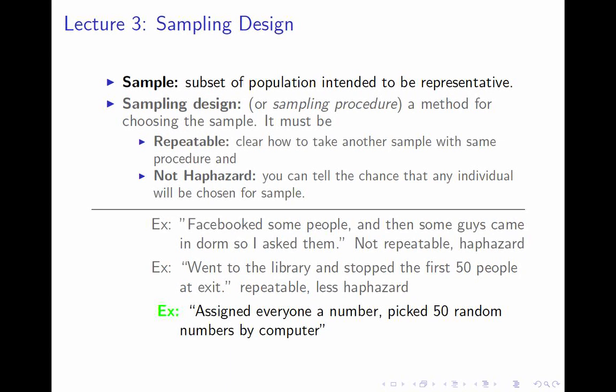Here's a third example: 'I assigned everyone in the population a number, I had my computer pick 50 random numbers, and I asked those people.' You can see I know exactly how to do that procedure — no problem. And it's not at all haphazard. I know exactly what each individual's chance of being in the survey is. They all have the same chance: 50 over the size of the population.